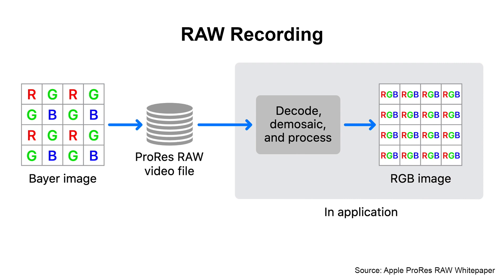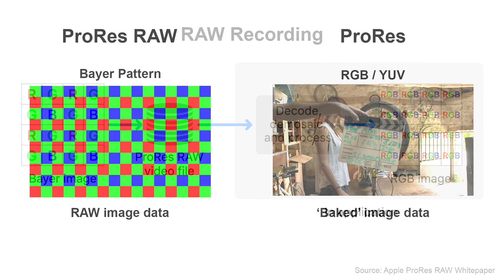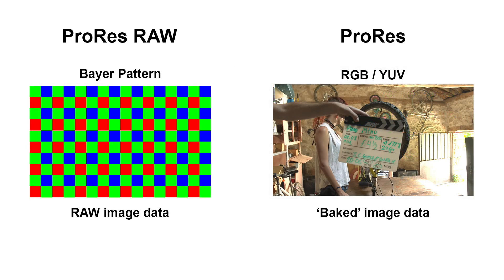So at the end of the day, what's the difference between a normal ProRes file and a ProRes RAW file? A conventional ProRes file stores the processed or baked image data, whereas a ProRes RAW file stores the unprocessed Bayer pattern — which makes it a true RAW format.